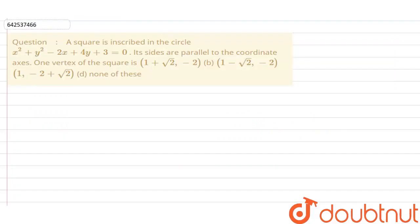Hello everyone, let's start with today's question. Today's question says that a square is inscribed in the circle x² + y² - 2x + 4y + 3 = 0, with sides parallel to the coordinate axes.